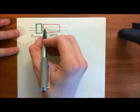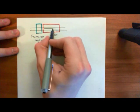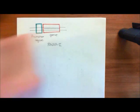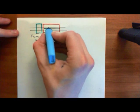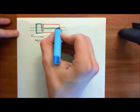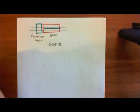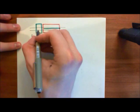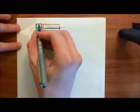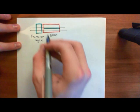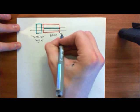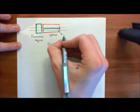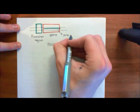At the promoter region, RNA polymerase 2 is going to load onto the DNA. Then it's going to work its way along the gene, synthesizing a piece of mRNA which is complementary to the coding strand of the gene. This is how the promoter region exerts its control over how much mRNA you are actually going to produce for this gene.